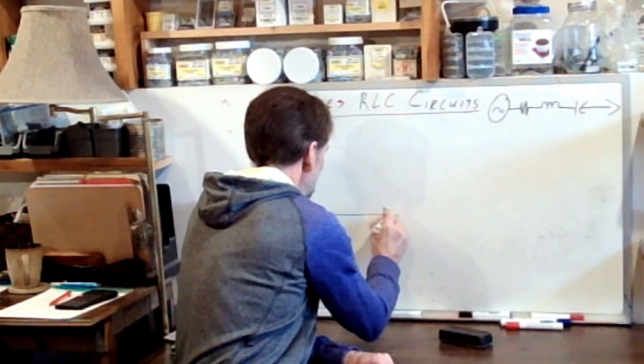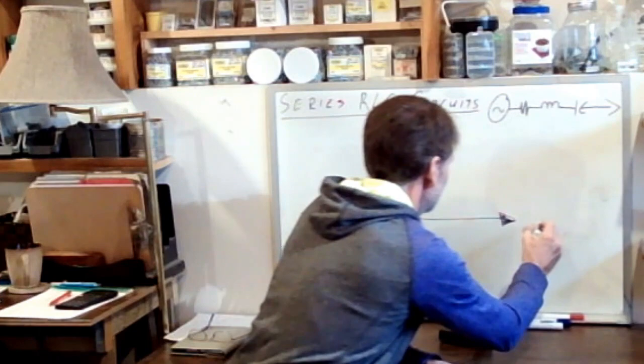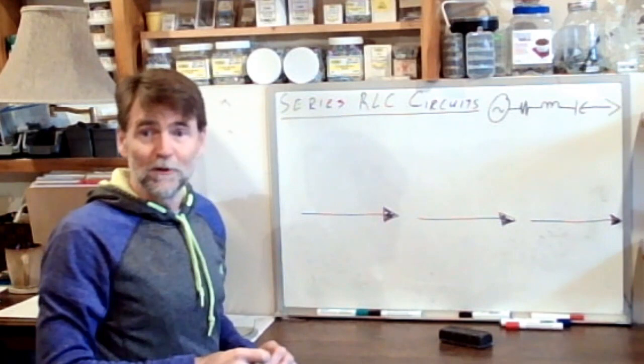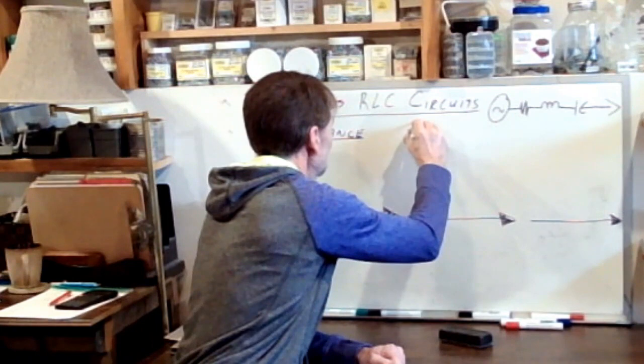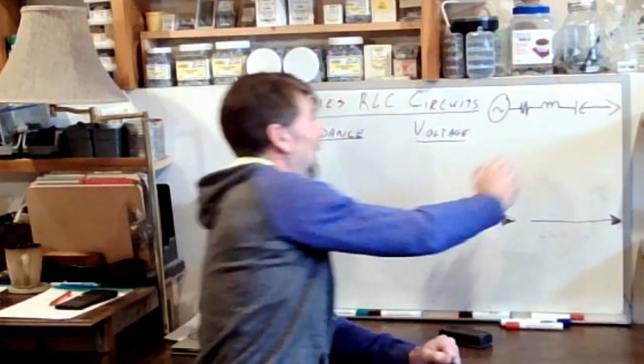So back to our three current vectors to build our three triangles which represent impedance, voltage, and power.